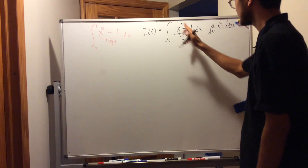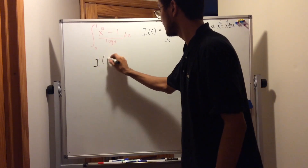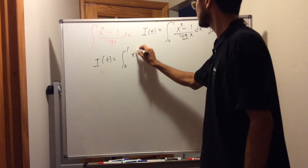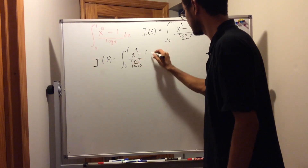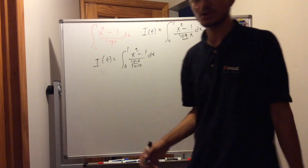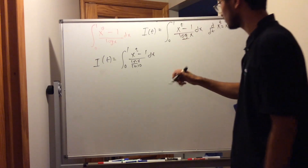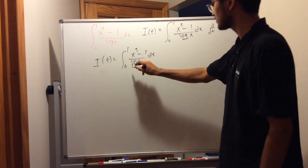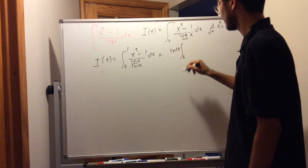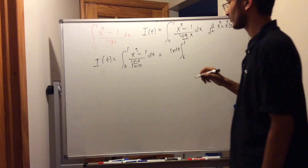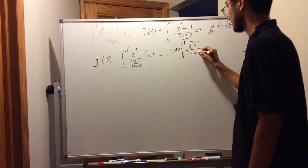So what we should do is change this expression using the change of base formula. We're going to write i(t) as the integral from 0 to 1 of x to the power of t, minus 1, divided by ln(x) over ln(10), dx. Since 1 over ln(10) is just a constant, we can bring it outside, giving us: i(t) = ln(10) times the integral from 0 to 1 of x to the power of t, minus 1, divided by ln(x), dx.